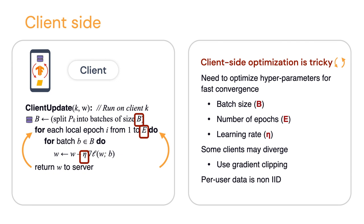When learning from different devices, you won't find the same amount or nature of data on each device. Some people type a lot, some type a lot less — someone might not have typed for a week because they went to the beach, while someone else has been working on their PhD thesis and typed a ton. We need algorithms that are robust to this mix of conditions and hyperparameters, to allow us to learn from all those devices at the same time.